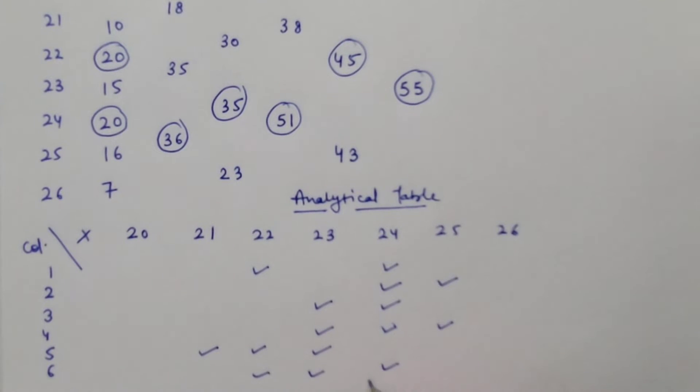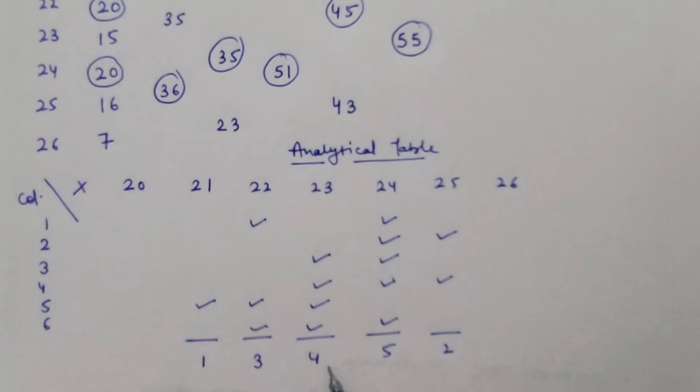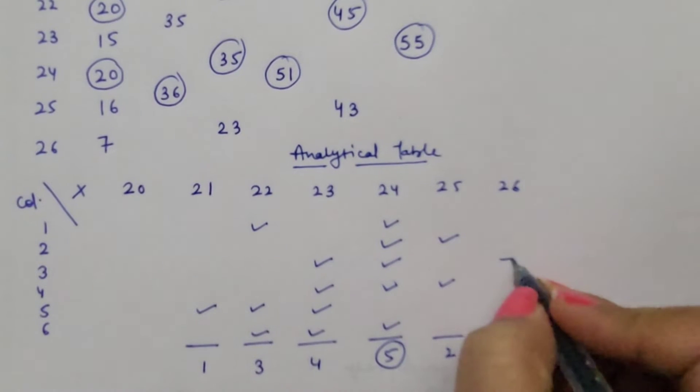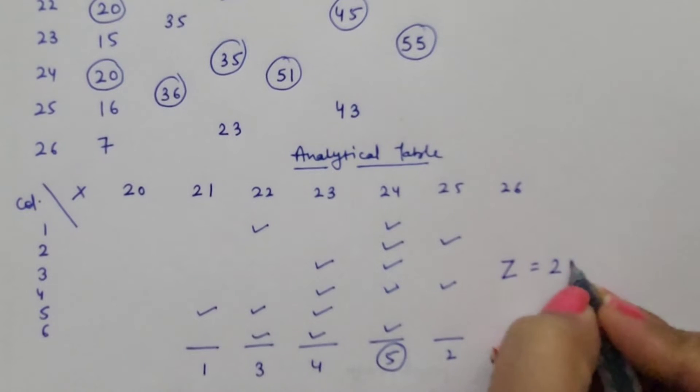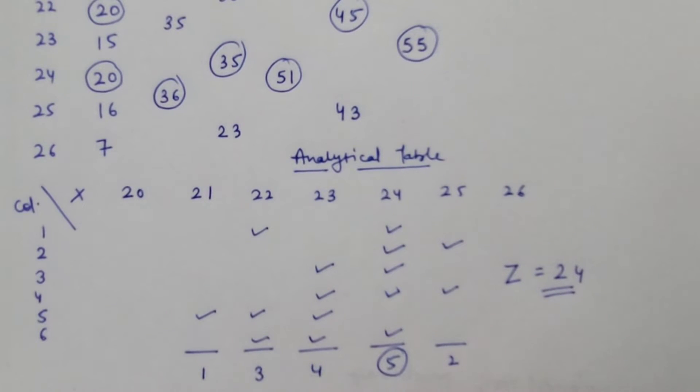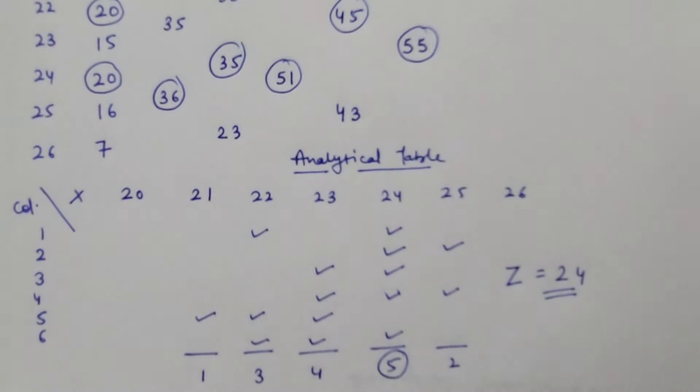Last step is to sum up all the ticks. So, 1, 3, 4, 5, and 2. Highest frequency 5. So, mode is equal to 24 due to highest frequency in the checklist. Next is continuous series.